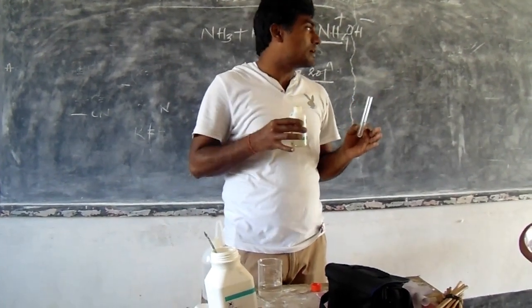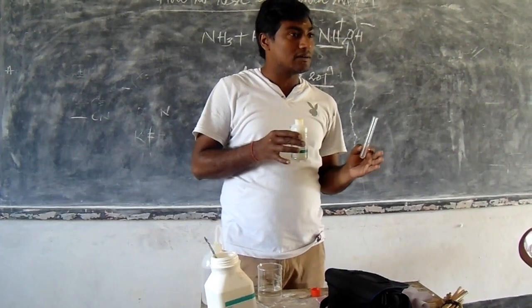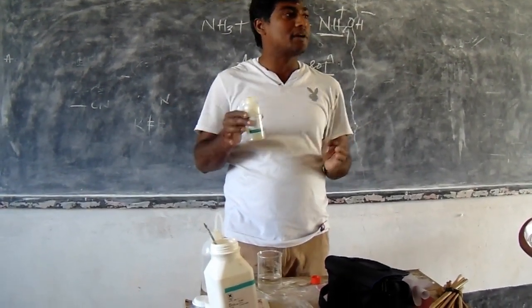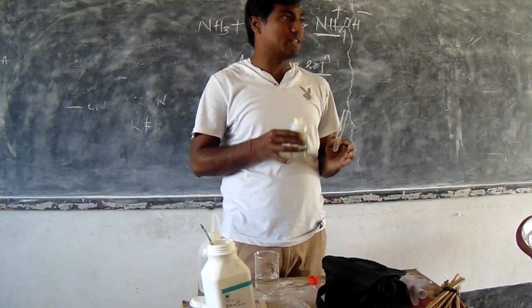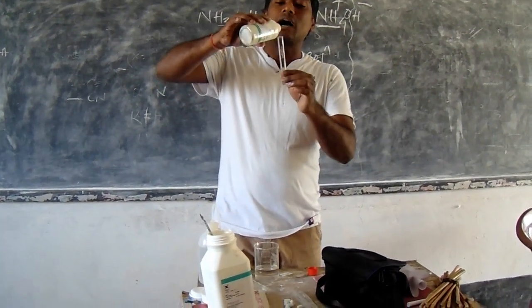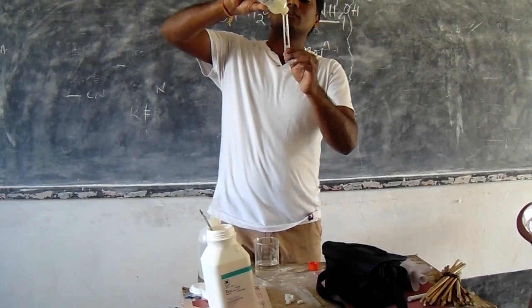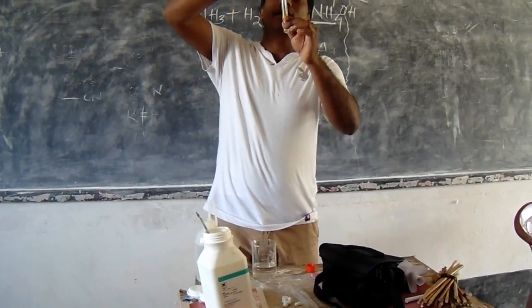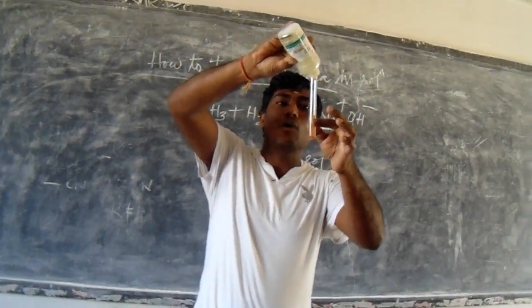We can take tap water, river water, or any other water sample and test it to check whether it contains ammonium ions. Let us add this ammonium solution to it and see what happens. We are getting a brown color.